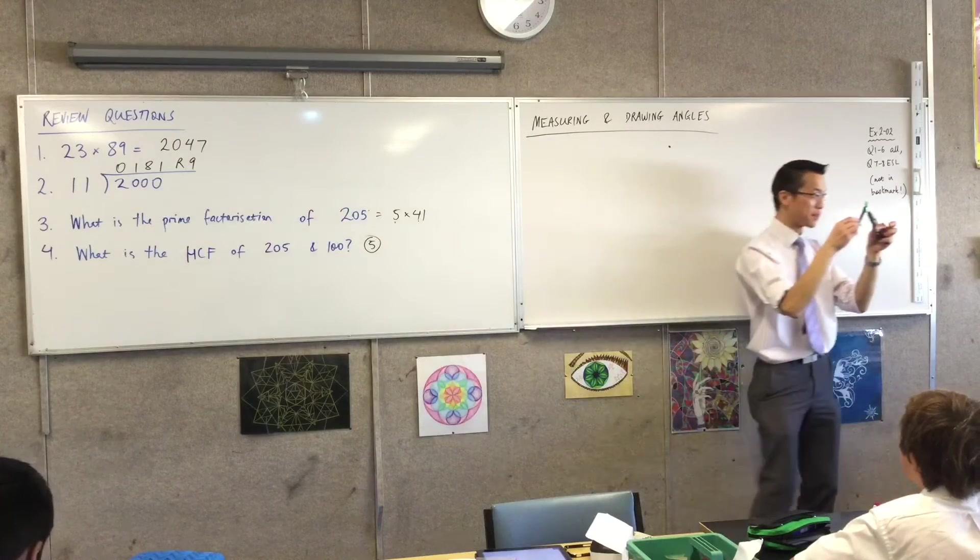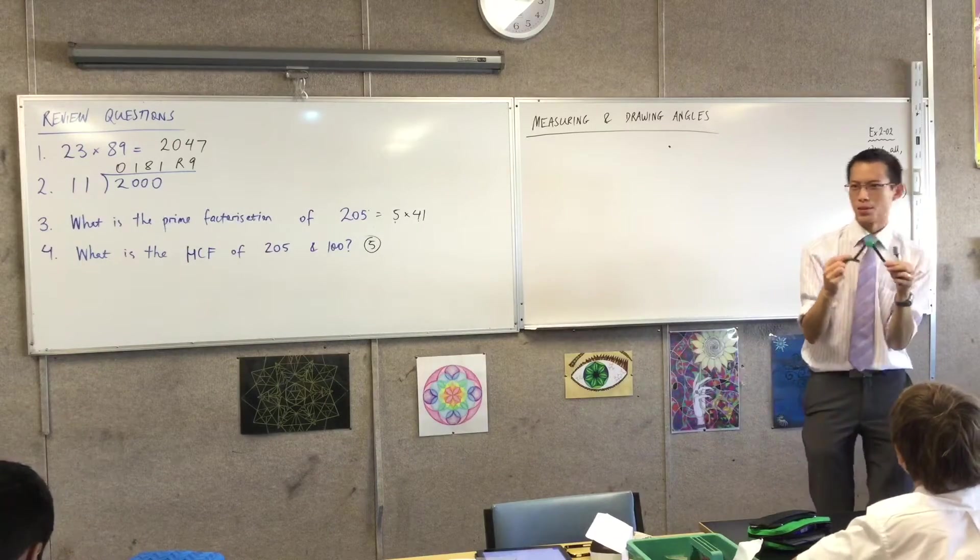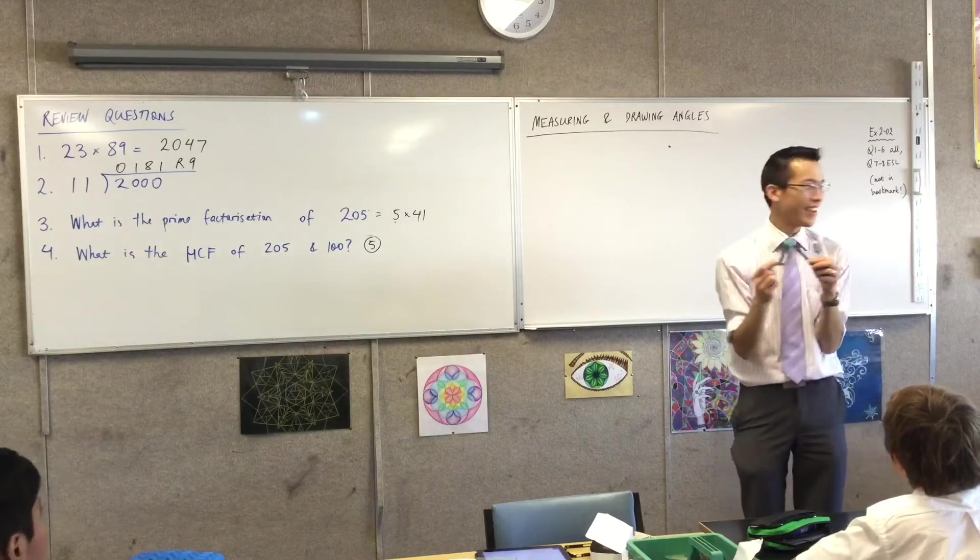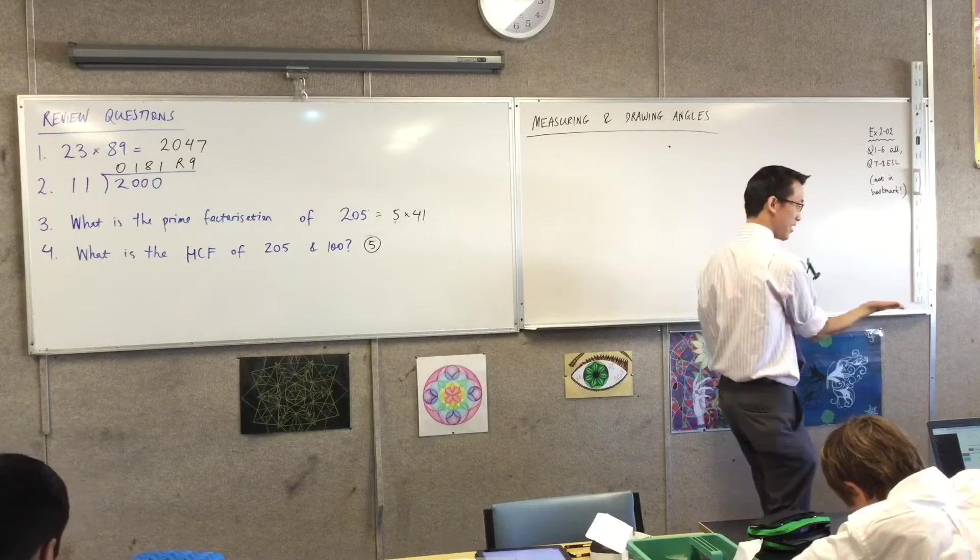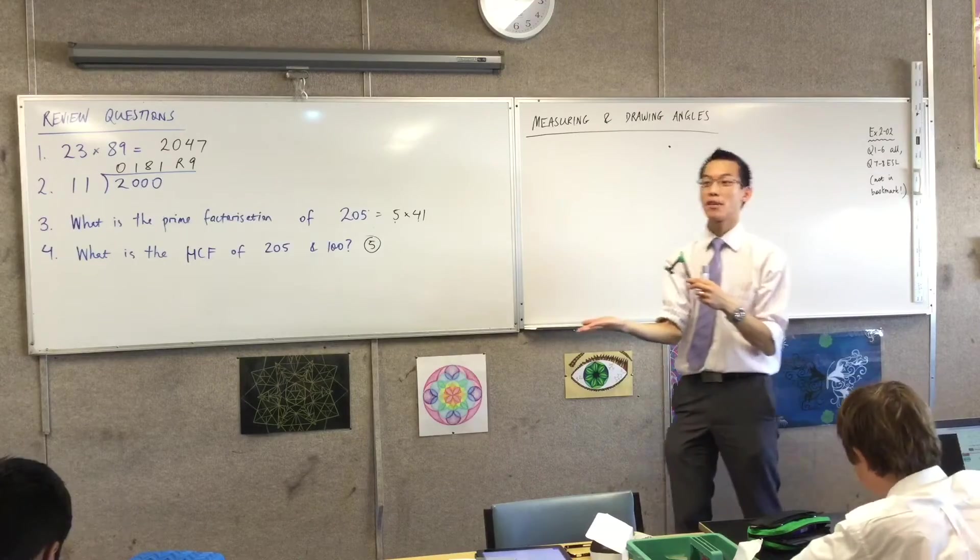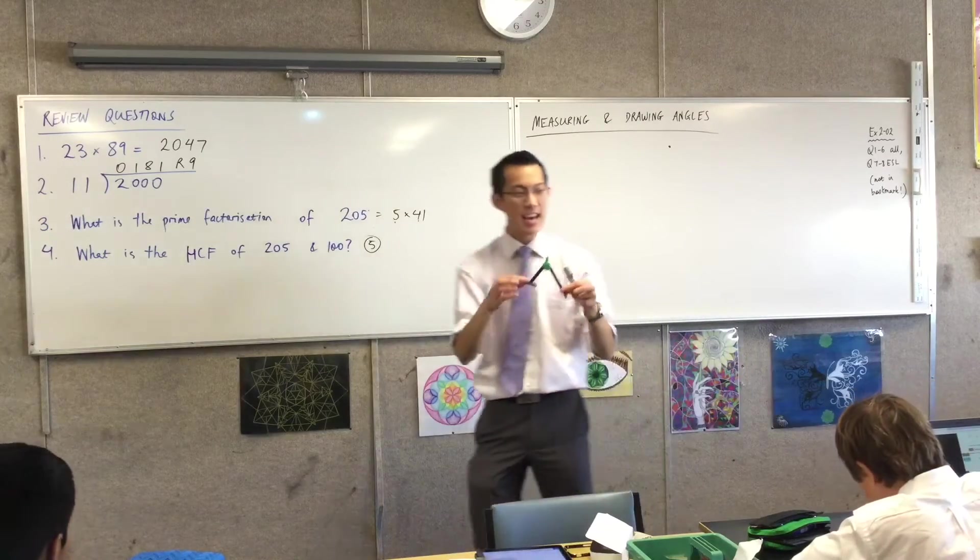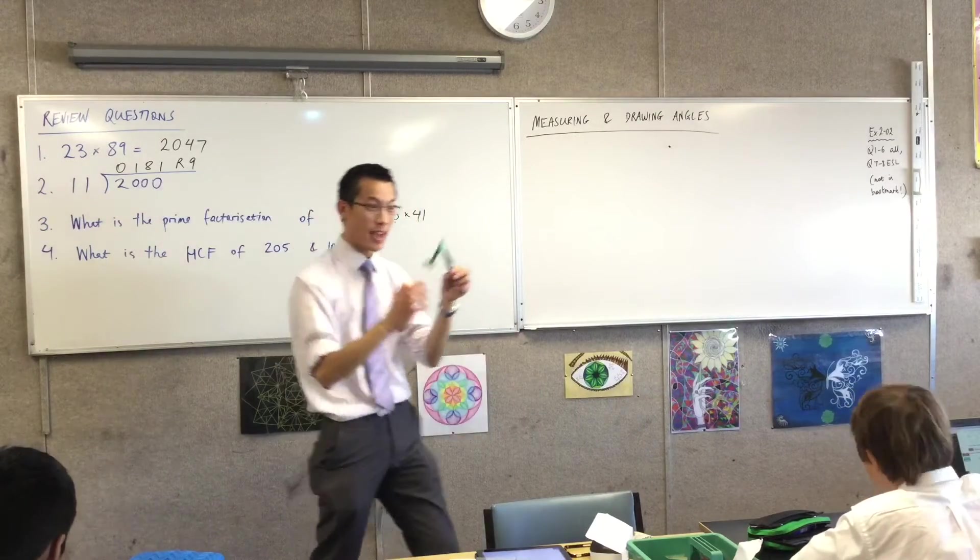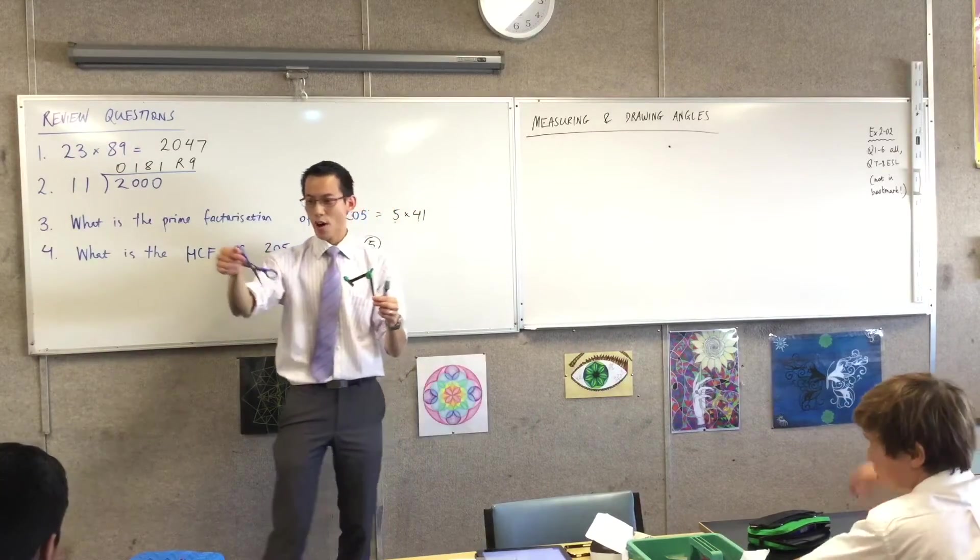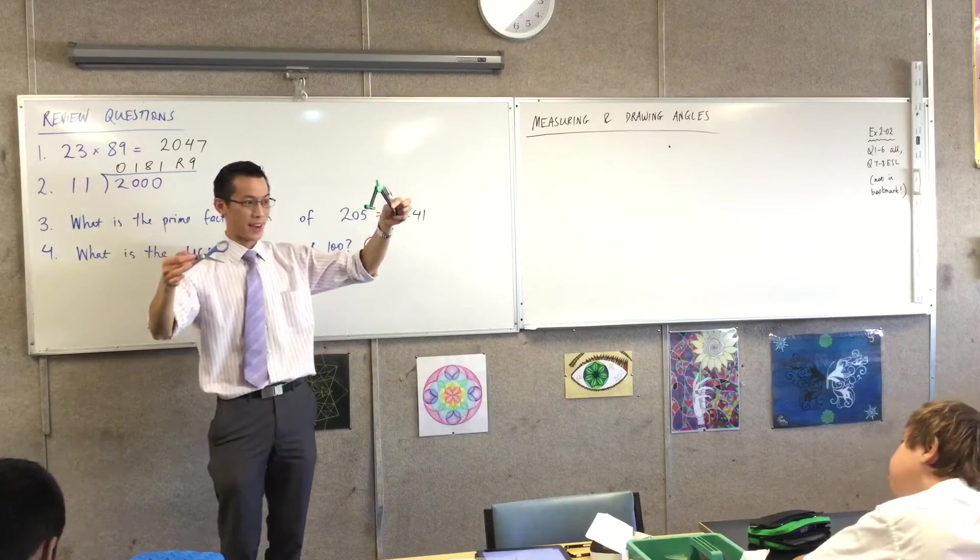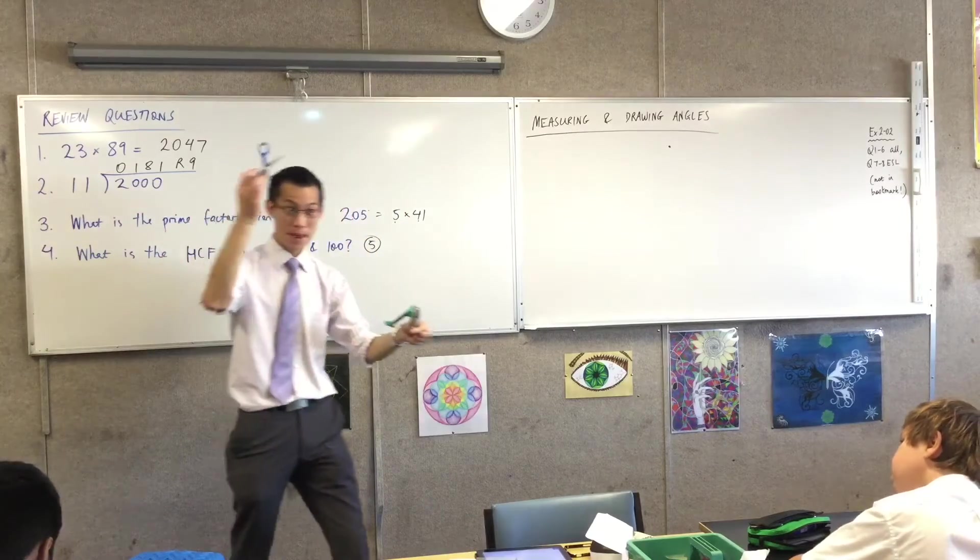This is a pair of compasses. By the way, it's not a compass. What's a compass? Yeah, the compass is the thing you look at and you point it in a direction, and it tells you which bearing you're on—north, south, east, west. This is a pair of compasses in the same way that this is a pair of scissors, right? There are two of them there. So, a pair of compasses, a pair of scissors.